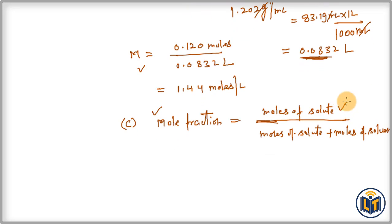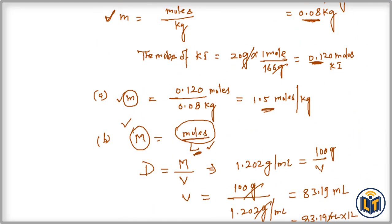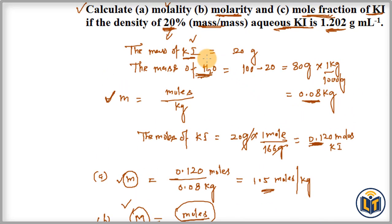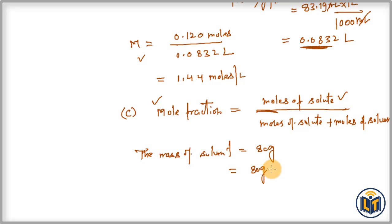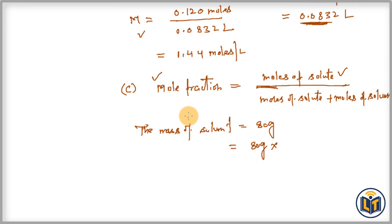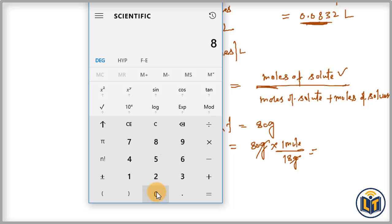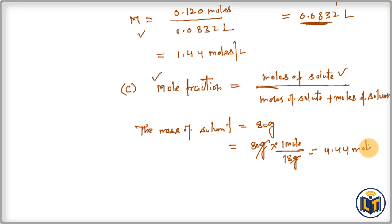Moles of solute (KI) are already calculated as 0.120 mol. We still need moles of solvent. Mass of solvent is 80 grams. Using dimensional analysis with the molar mass of water (18 g/mol): moles of H₂O equals 80 grams divided by 18 g/mol — grams cancel — giving us 4.44 moles of water.